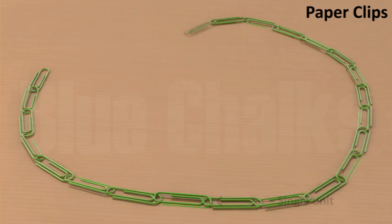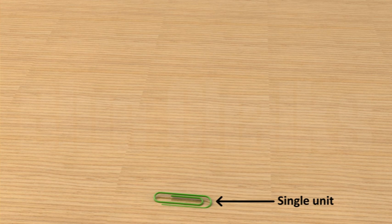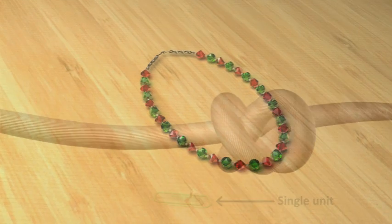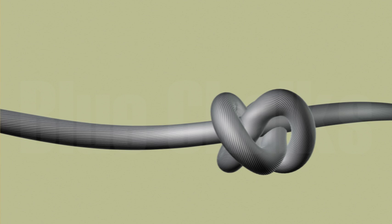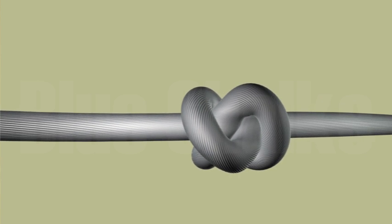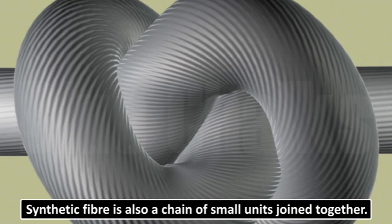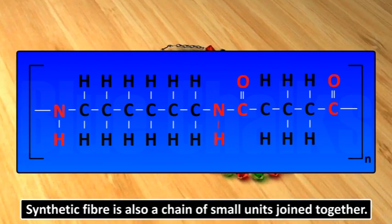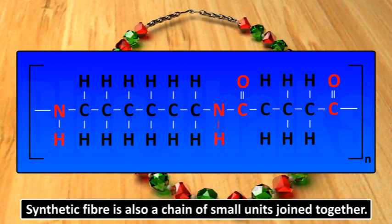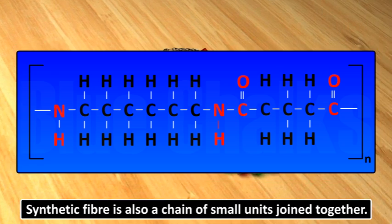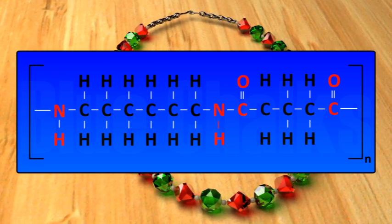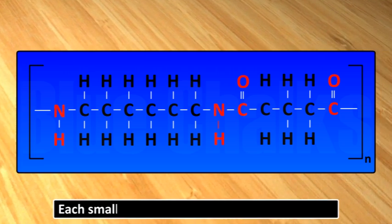As we make the chain of paper clips, similarly synthetic fiber is also a chain of small units joined together to give a whole fabric. Each of these small units is actually a chemical substance.